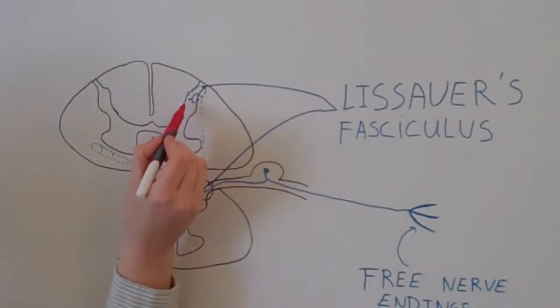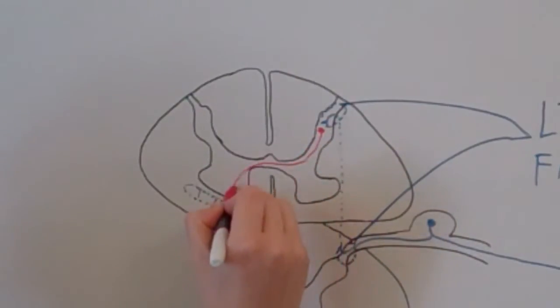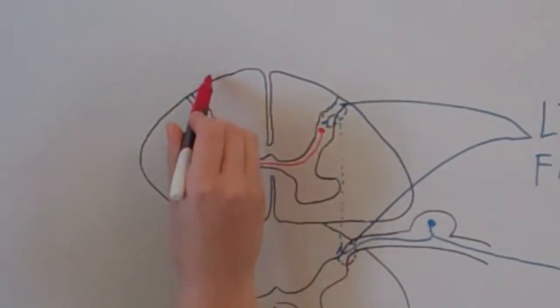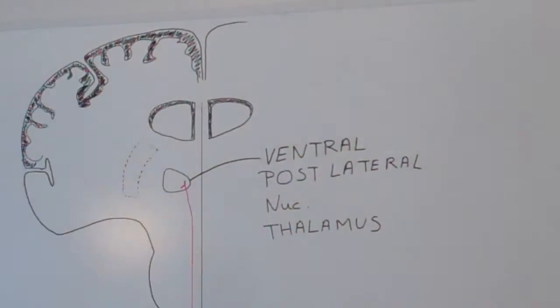Contralateral ascension. The secondary neurons send their axons across the midline, before going up through the lateral spinothalamic tract, until they reach and synapse on the ventral post-lateral nucleus of the thalamus.